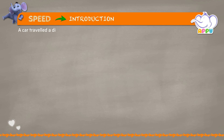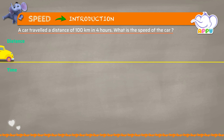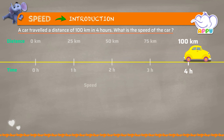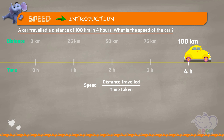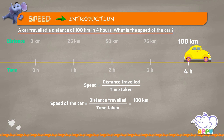A car traveled a distance of 100 kilometers in four hours. What is the speed of the car? Speed equals distance traveled divided by time taken. Distance traveled by the car equals 100 kilometers, and time taken to travel equals four hours.